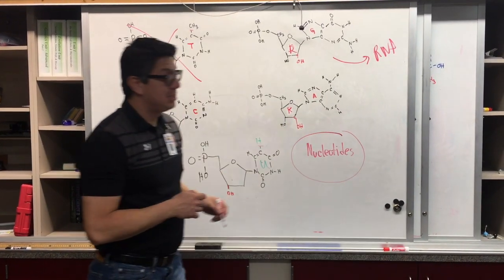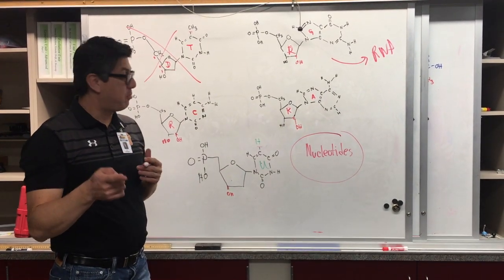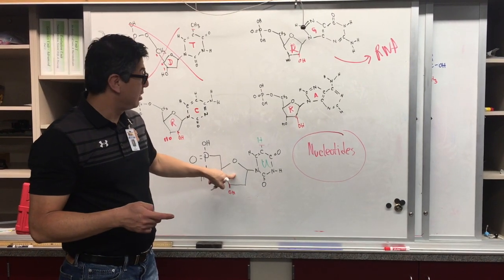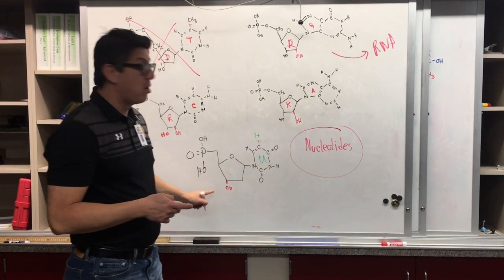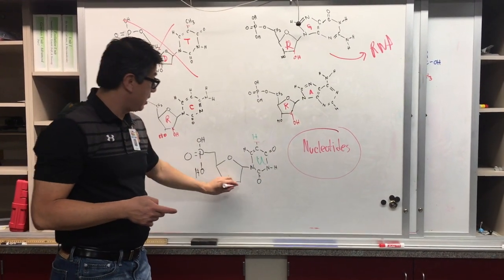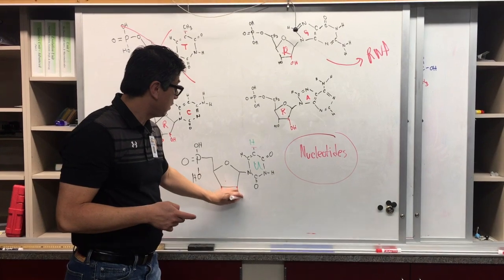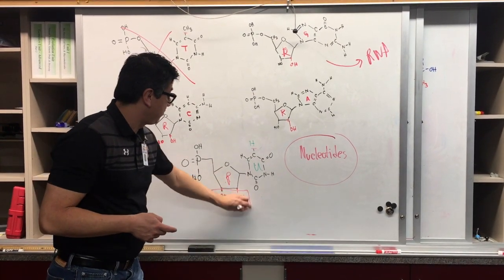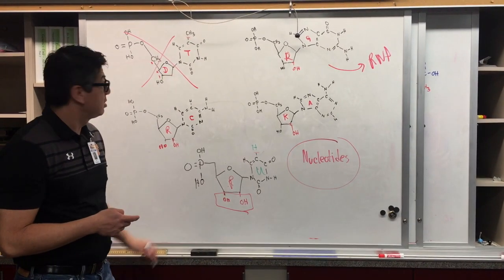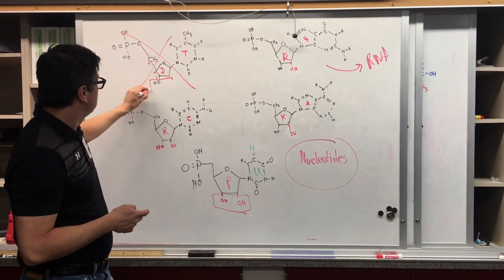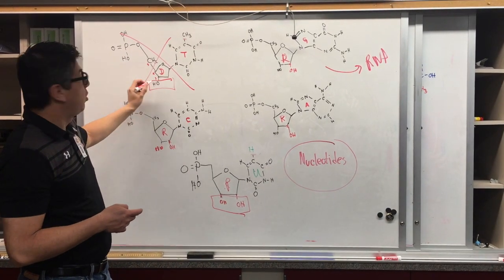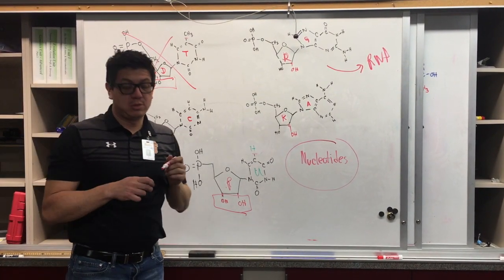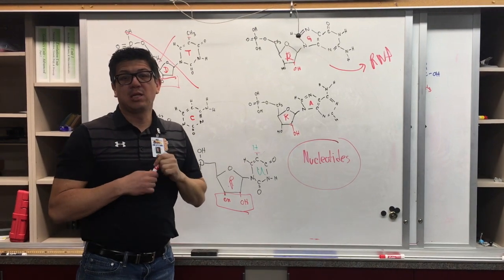At the end of the day, remember for the lab practical: how do you tell a DNA nucleotide from an RNA nucleotide? RNA nucleotides have two oxygens, while DNA nucleotides only have one oxygen. Hopefully this helps — see you in class.